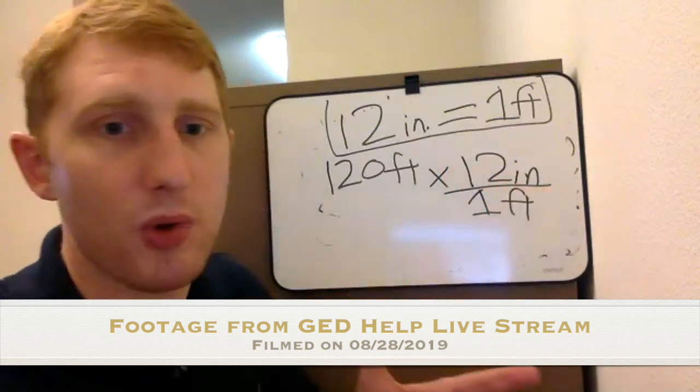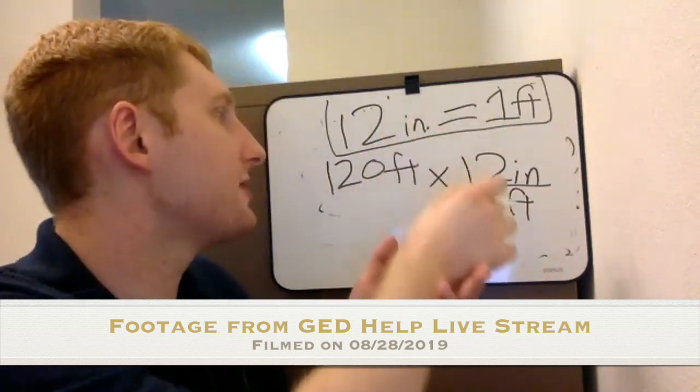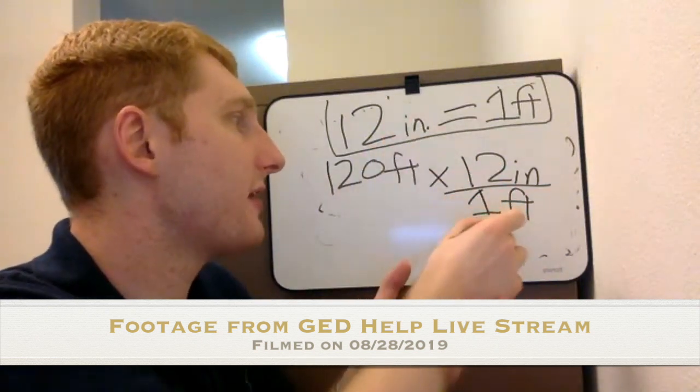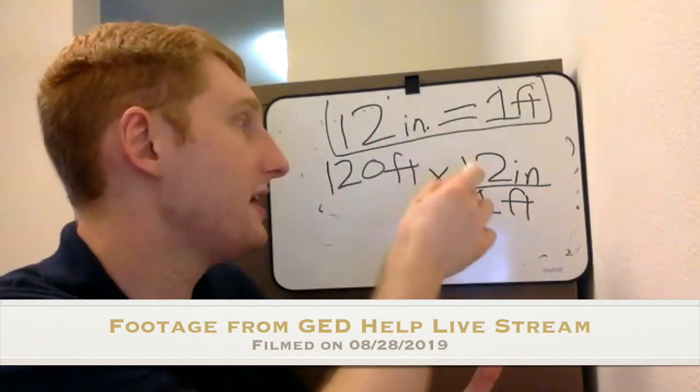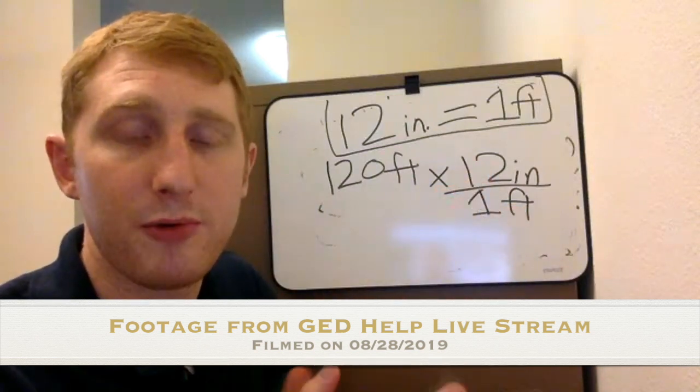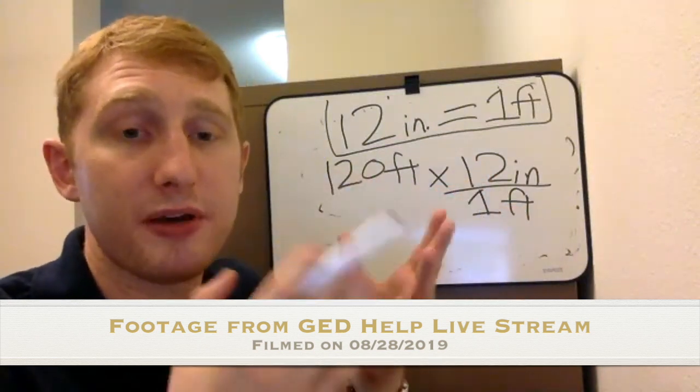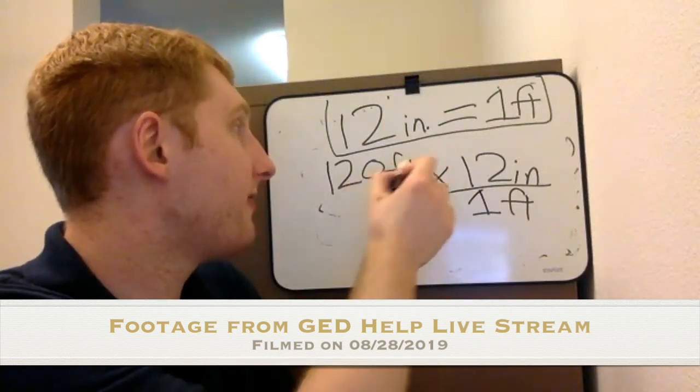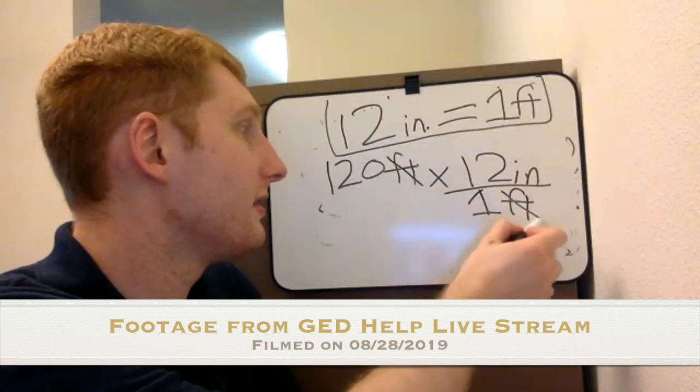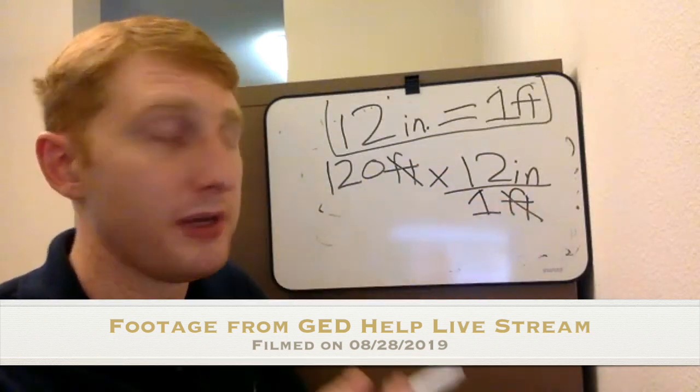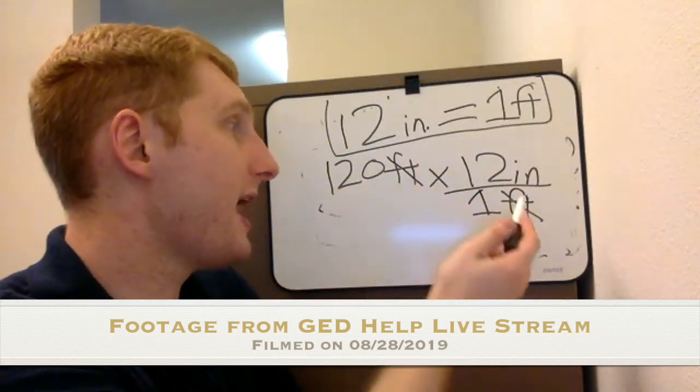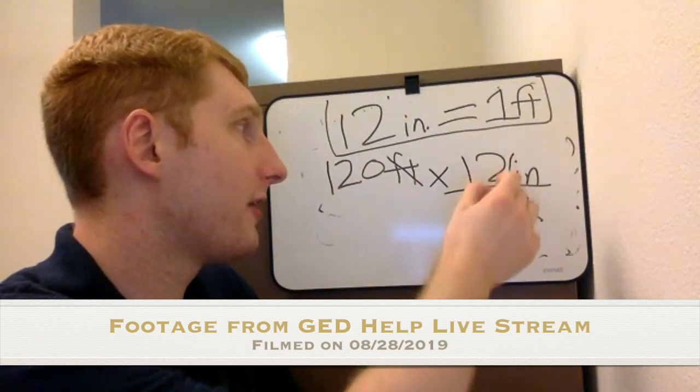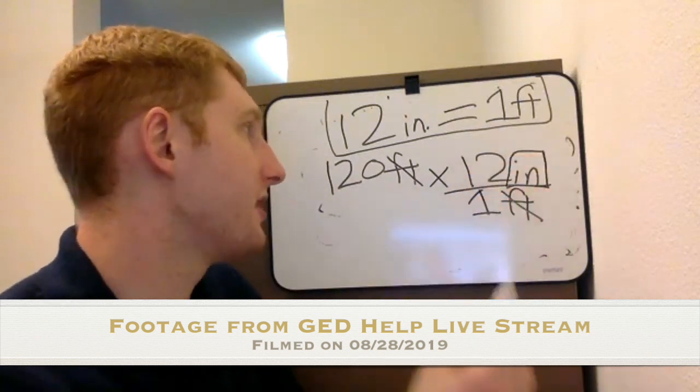Why do I want to set this up so that I've got feet down here in the denominator and inches up here in the numerator? Does anybody know why that would be? The reason is because they're going to cancel out. So we're dividing. When we divide feet by feet, they're just going to cancel out. And so then I do the math here and all I have left are inches. So my answer is going to be in inches.